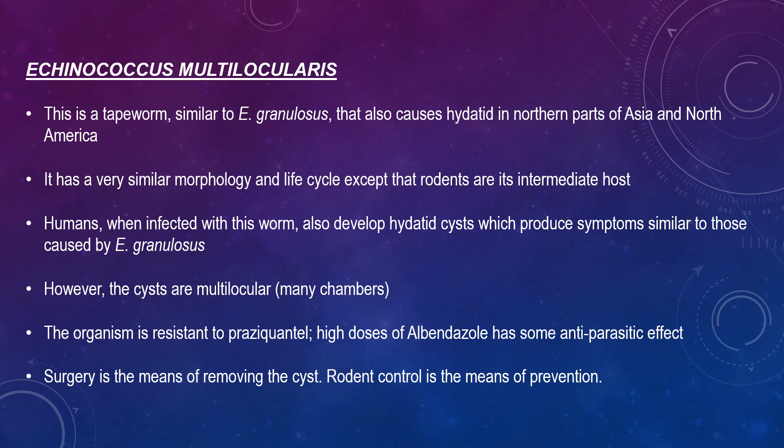Finally, Echinococcus multilocularis is a tapeworm similar to E. granulosus that also causes hydatid disease in northern parts of Asia and North America. It has a very similar morphology and life cycle except that rodents are the intermediate host. Humans when infected also develop hydatid cysts which produce symptoms similar to those caused by E. granulosus. However, the cysts are multilocular with many chambers and the organism is resistant to praziquantel. High doses of albendazole have some anti-parasitic effect. Surgery is the means of removing the cysts; rodent control is the means of prevention.